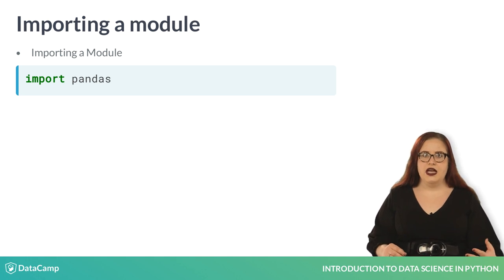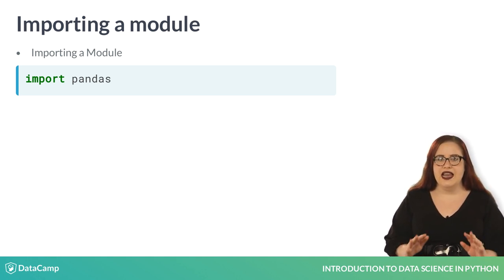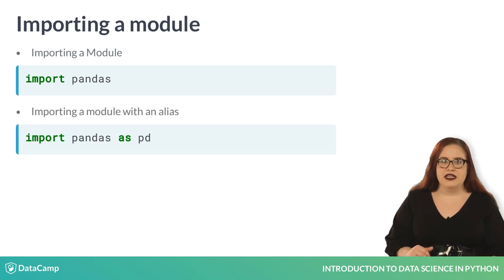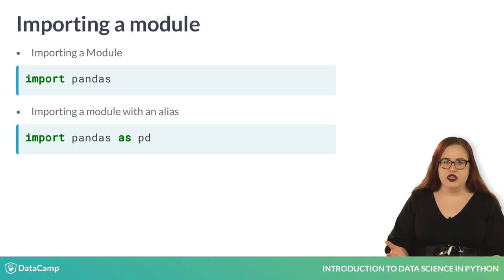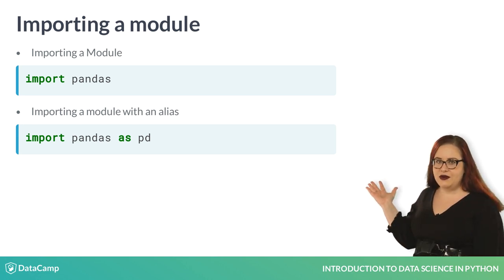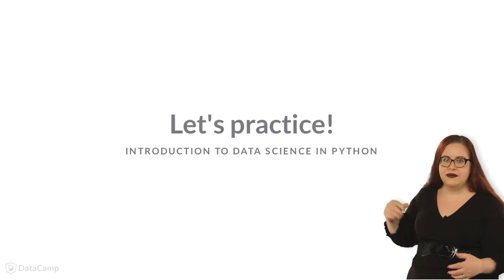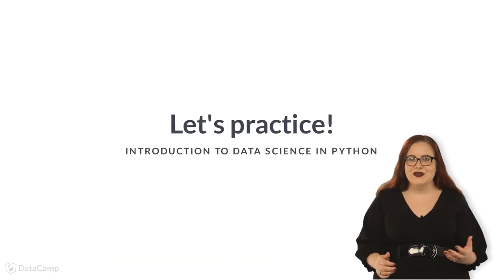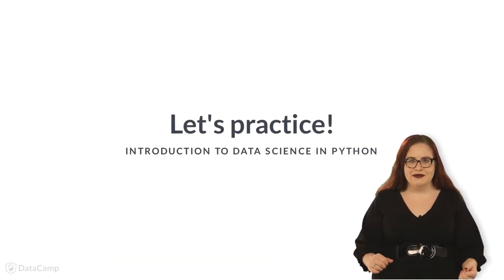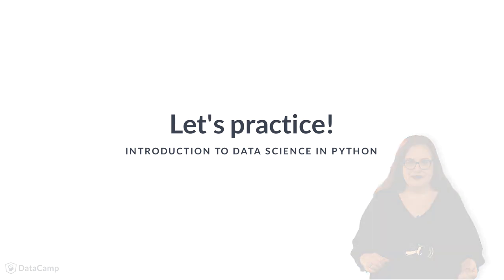Often times, module names are long, so we can shorten them by using an alias. To give your module an alias, just add as and a shorter name to your original import statement. This statement will alias pandas as pd. Let's practice what we've learned using the console and script editor.